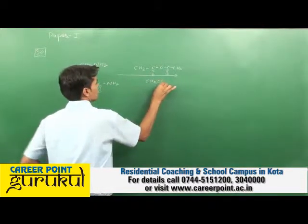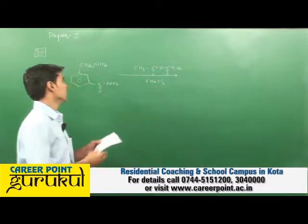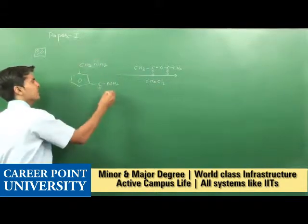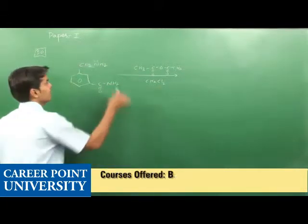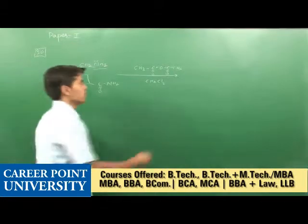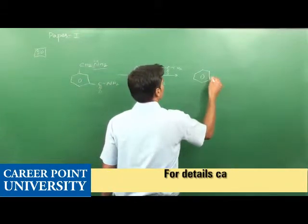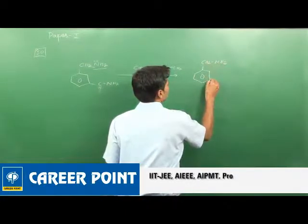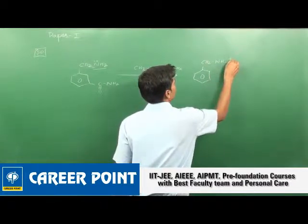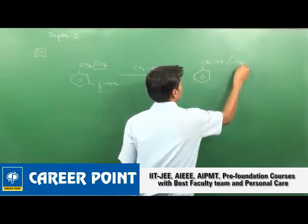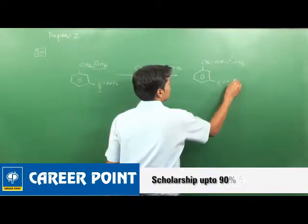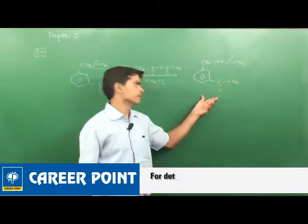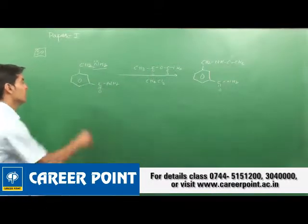In the solvent CH₂Cl₂, acetylation of the amine occurs. The CH₂NH₂ group is more nucleophilic than the amide group, so acetylation occurs at this nitrogen. The major product is one in which acetylation occurs at the amine position and the amide group remains unacetylated. So the answer should be A.